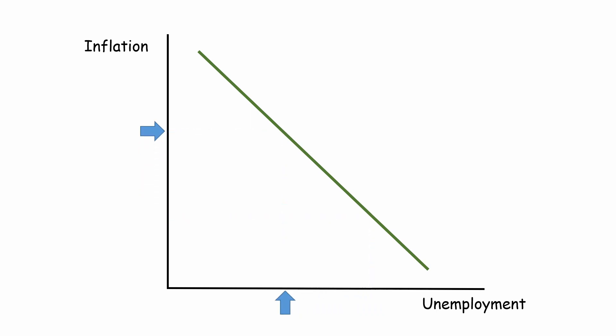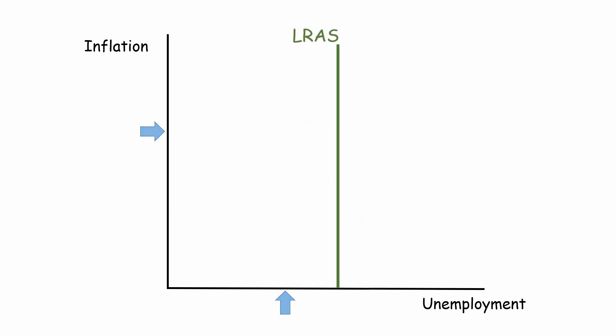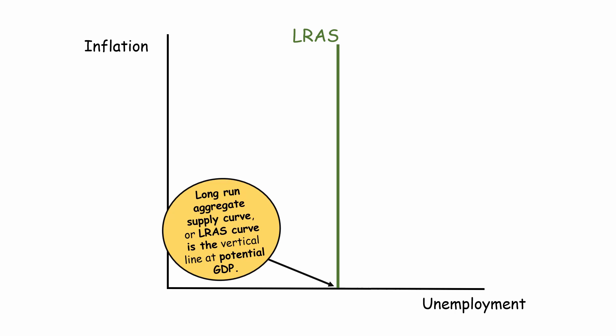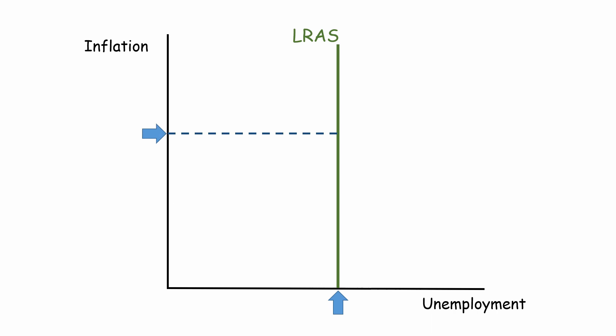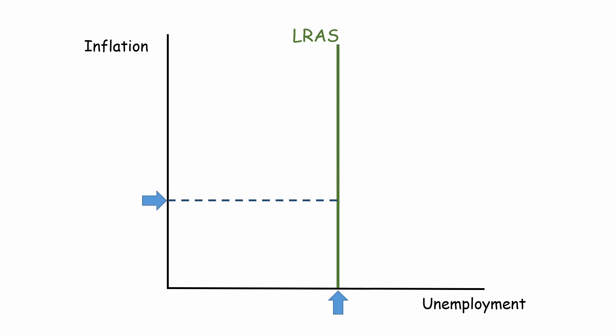In the long run, the Phillips Curve becomes a vertical line. It lies at the level of potential GDP or at the state of natural unemployment. This is because in the long run, there will be no trade-off between unemployment and inflation. This means at any level of price or economic growth, employment level will remain the same — at the natural state of unemployment.